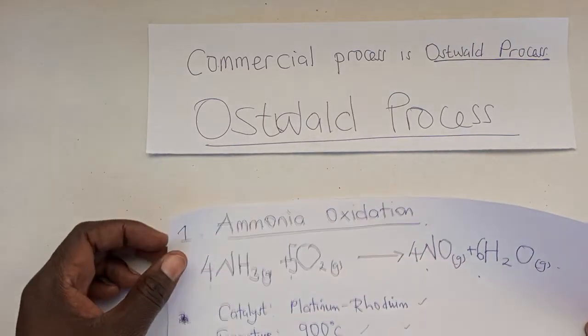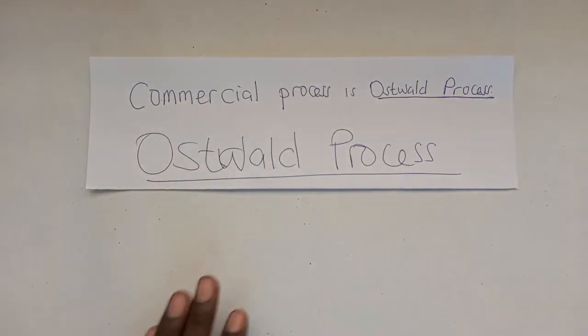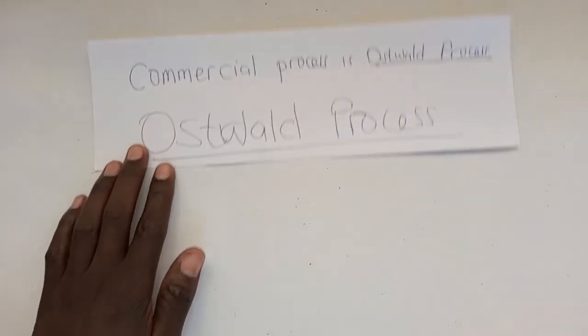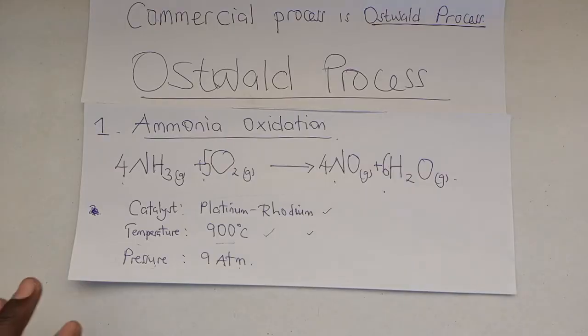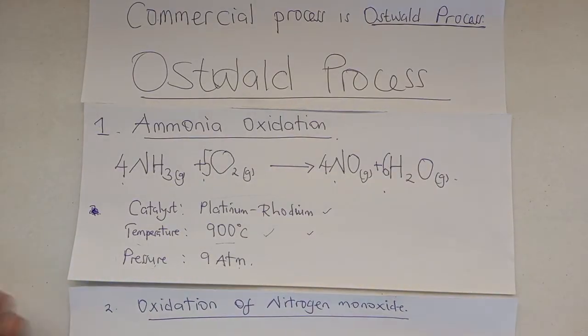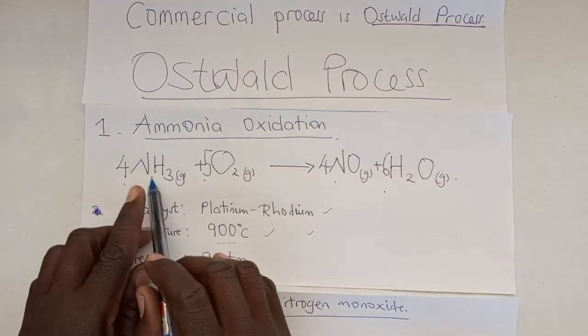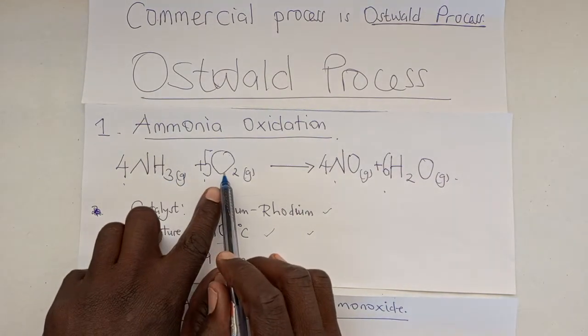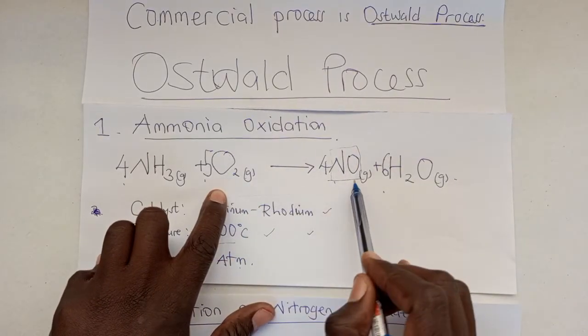The second process is known as the oxidation of nitrogen monoxide. Remember, in the first reaction, we reacted ammonia with oxygen gas to produce nitrogen monoxide. Now it is this nitrogen monoxide that we are going to oxidize to nitrogen dioxide.